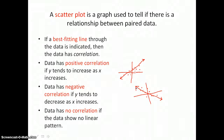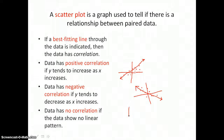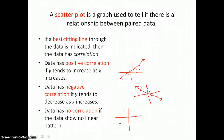Data has no correlation if the data show no linear pattern. We can represent that graphically where the points are just too scattered in the scatterplot to indicate any sort of best-fitting line.